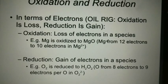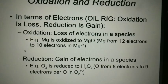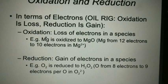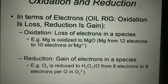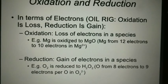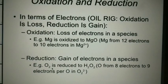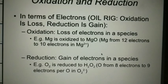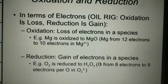Oxidation is loss of electrons in a species. Mg is oxidized to MgO — from 12 electrons to 10 electrons in Mg2+. Magnesium has 0 charge and here it has plus 2 charge, so the oxidation number increased, meaning oxidation occurs and loss of electrons occurs. Another example: copper is oxidized to Cu2+ — from 0 to 2+, removal of electrons takes place. Reduction means gain of electrons in any species.